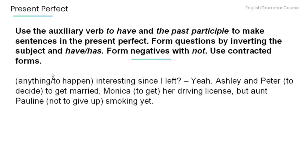And now let's review and practice a bit. Remember that we use the auxiliary verb have and the past participle to make sentences in the present perfect. Now read the following sentences and form questions by inverting the subject and have or has. Form negatives with not and use contracted forms.